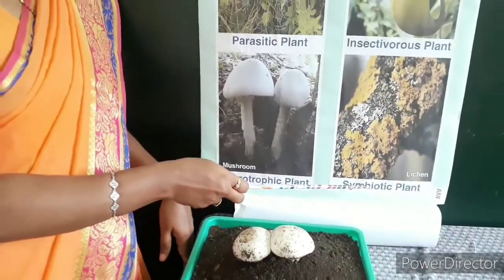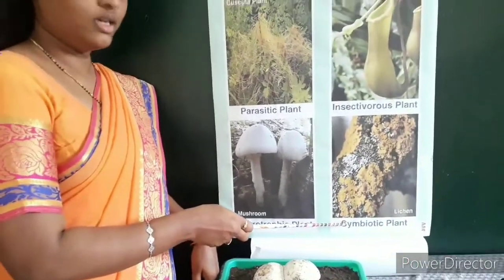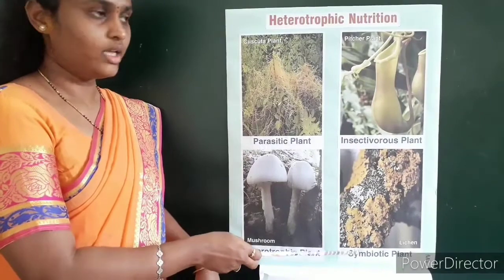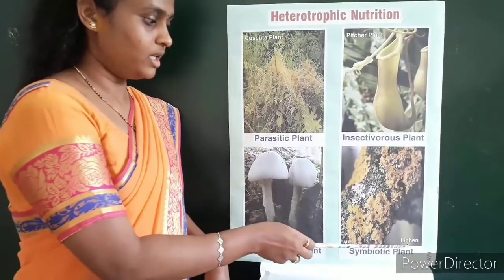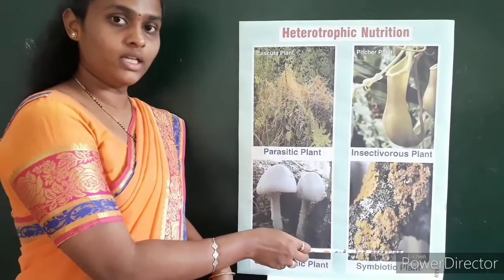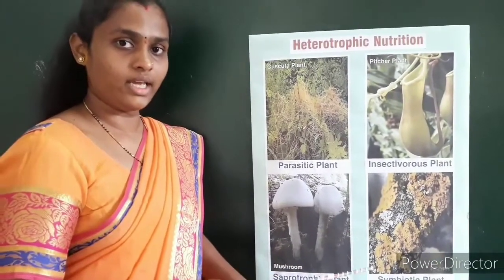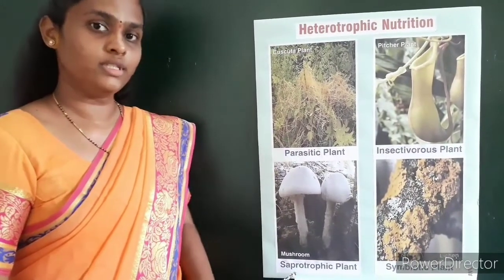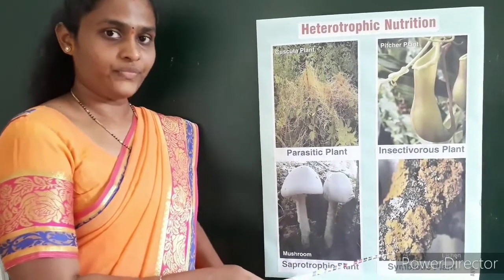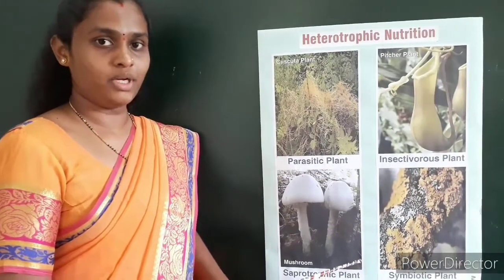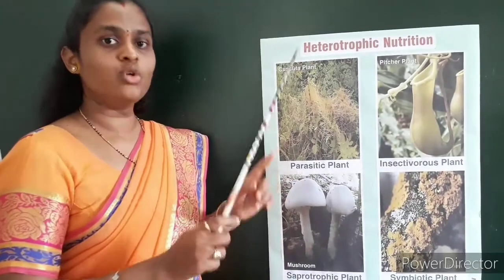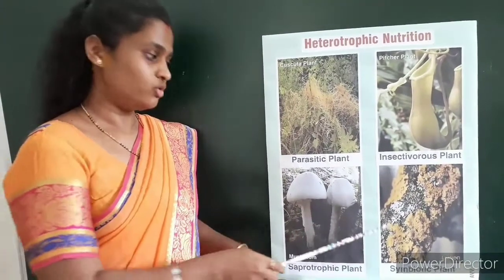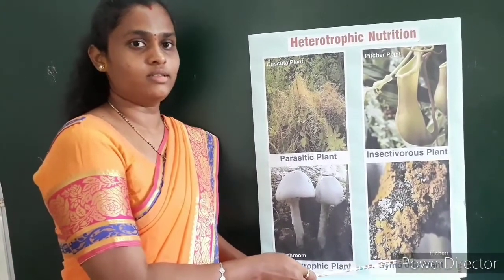Symbiotic plants are plants where two living organisms work together. The example for a symbiotic plant is lichen. In lichen there are two organisms: algae and fungi. Algae, which is an autotroph, supplies food to the fungi. Fungi supplies water and minerals to the algae. These two organisms work together for mutual benefit. We call that process symbiosis.